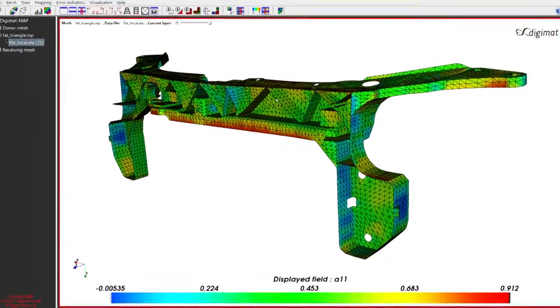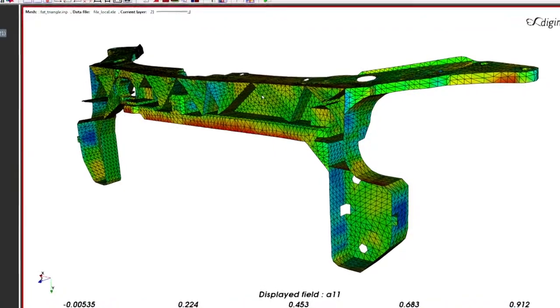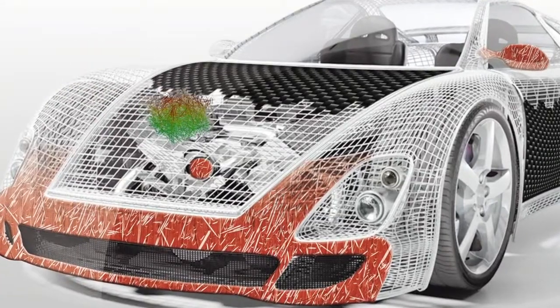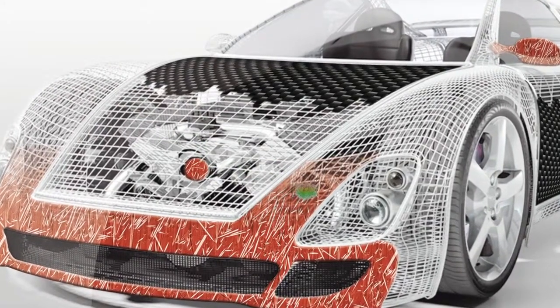Once you have engineered the new material, what you need to do is give it to your structural engineers to put it in a structure for an end performance, like an airplane or a car. And in this case, Digimat becomes like a virtual material inside the finite element analysis of your car or airplane.